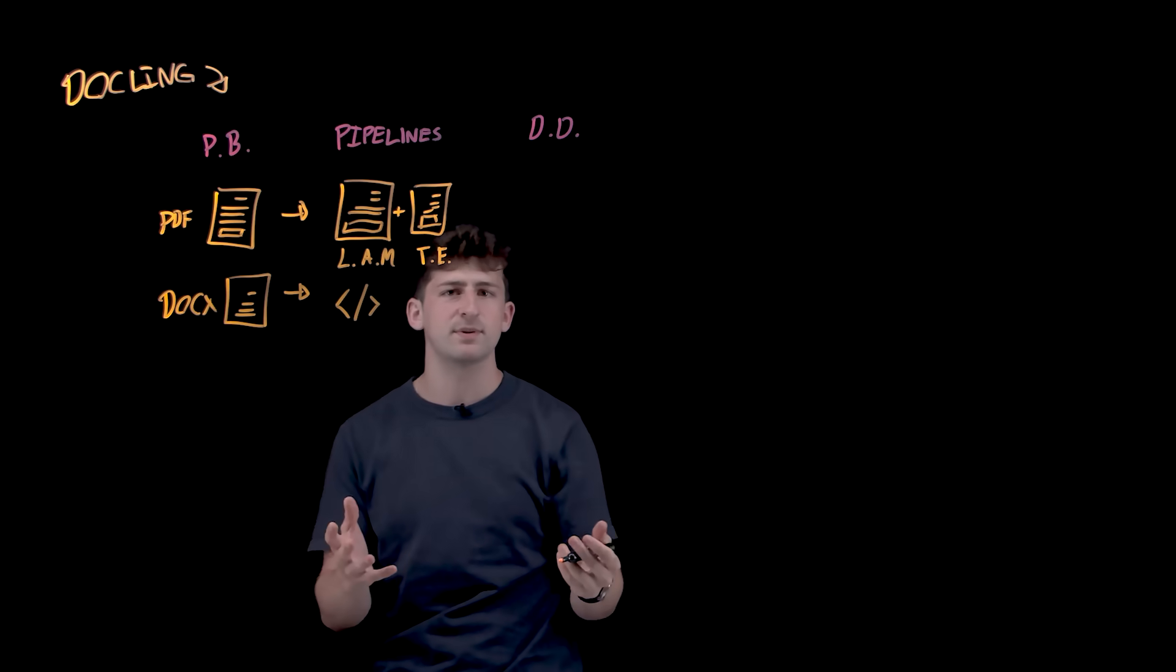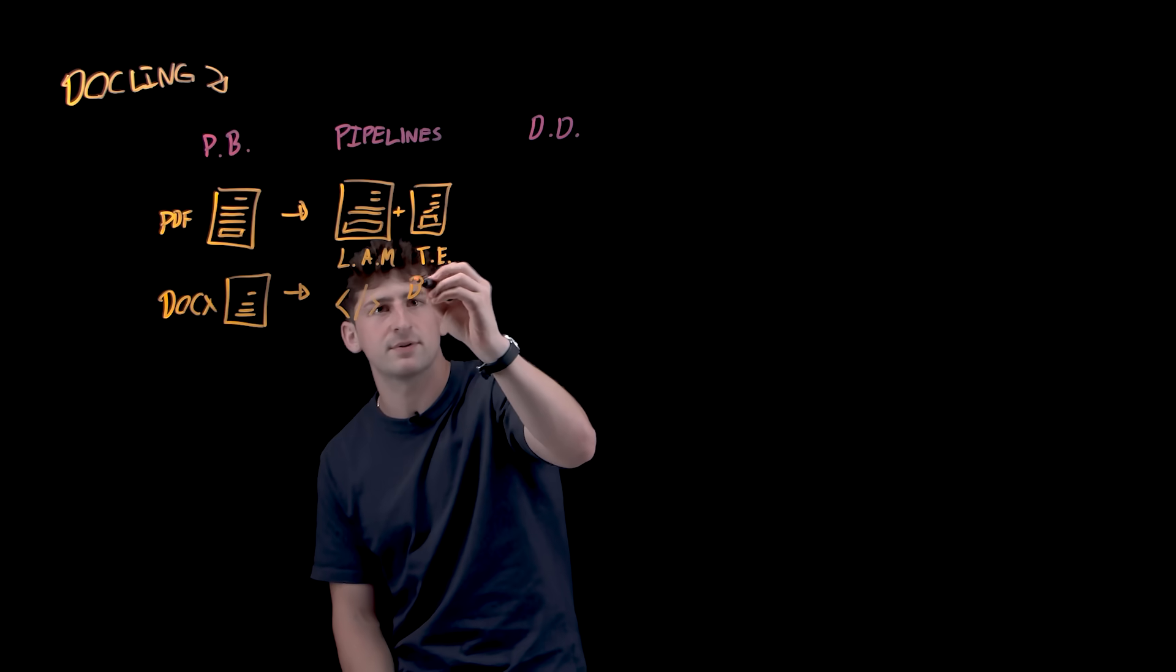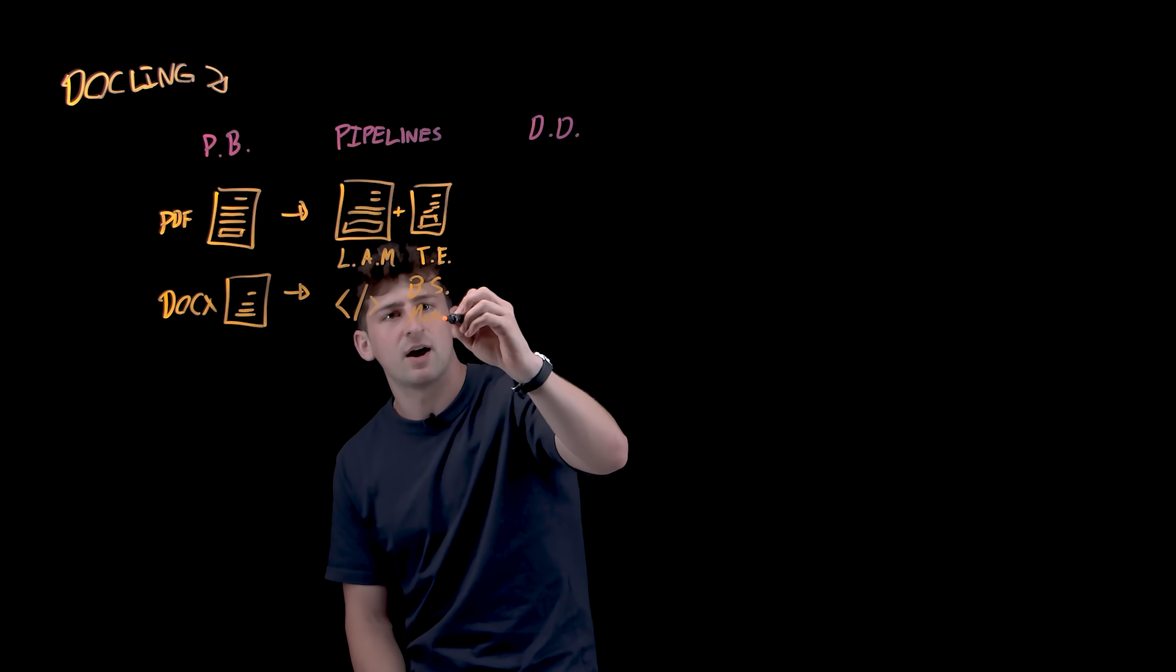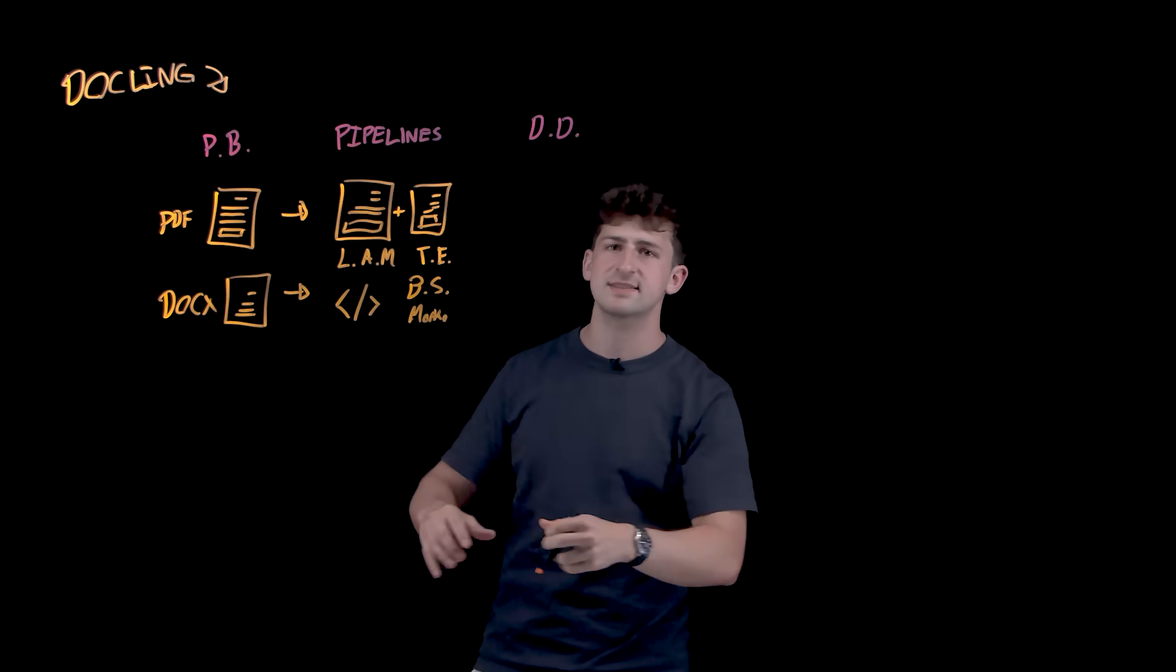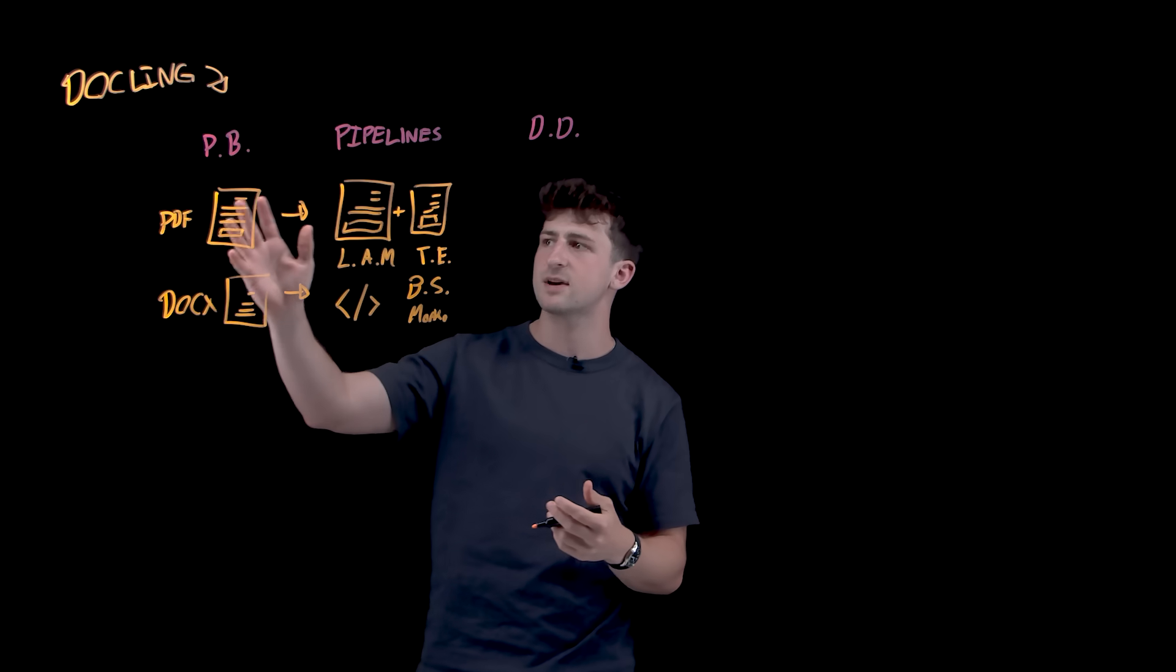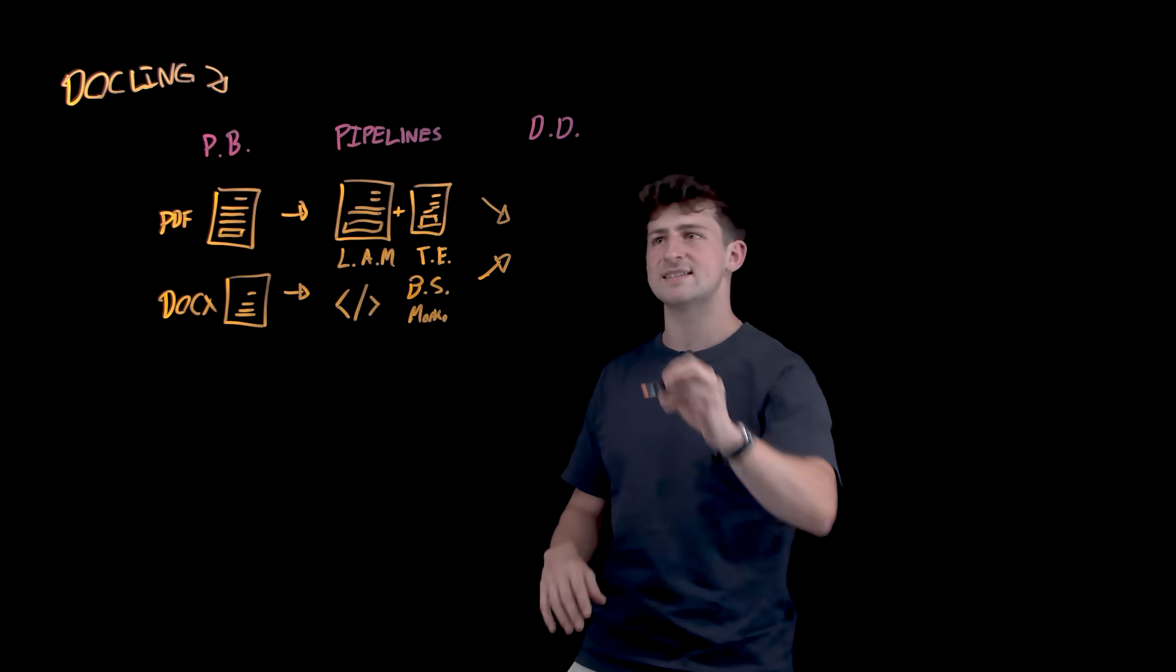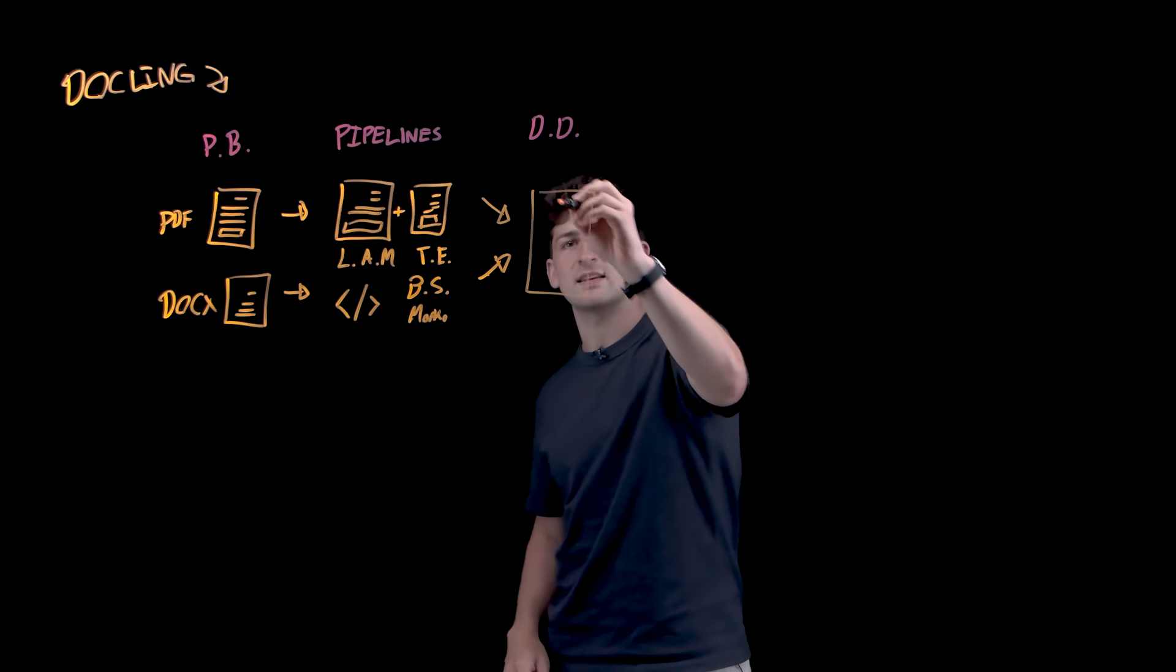using a few different open-source libraries. So, for example, you can think of Beautiful Soup, and also Marco, which are essentially transforming this and enriching this document, just as we did with the PDF, into the final output. And the final output here is what's known as the Dockling document.